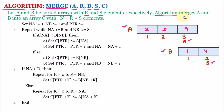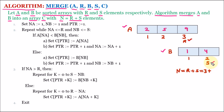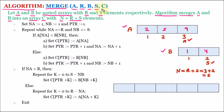The merge sort algorithm combines or merges a and b into an array c. We take one more array whose size will be n, equal to r plus s. So n equals r plus s, and we know r is 3 and s is 2, so 3 plus 2 equals 5. We need one more array of size 5, and this array is named c. So c contains n elements.